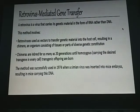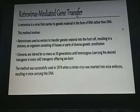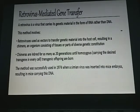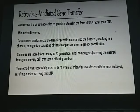In retrovirus-mediated gene transfer, a retrovirus — which carries genetic material as RNA rather than DNA — is used as a vector to transfer genetic material into the host cell, resulting in a chimera: an organism consisting of tissues of diverse genetic constitution. Chimeras are inbred for up to 20 generations until homozygous transgenic offsprings are born. This method was successfully used in 1974 when a simian virus was inserted into mouse embryos.